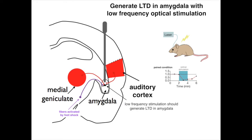So they're going to take mice that previously experienced the paired condition with optical stimulation, and generate long-term depression in the amygdala with low-frequency optical stimulation.